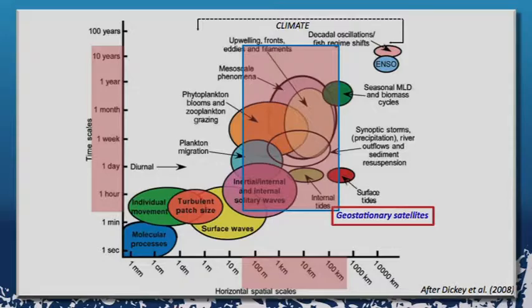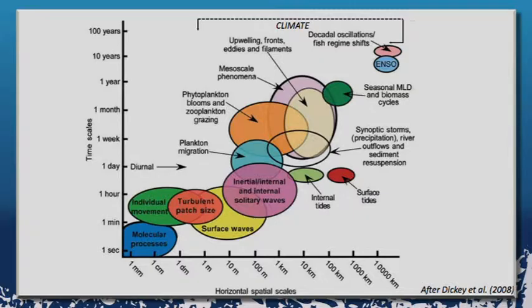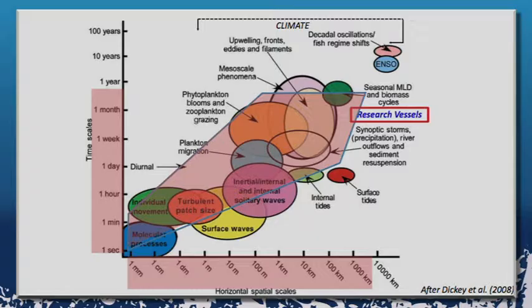There are also geostationary satellites. Once in orbit, they're just looking at one place on the planet, and you can measure ocean color and other properties of that one place very rapidly — say, every 15 minutes. But you don't get the larger spatial area coverage that you do with a polar orbiting satellite.